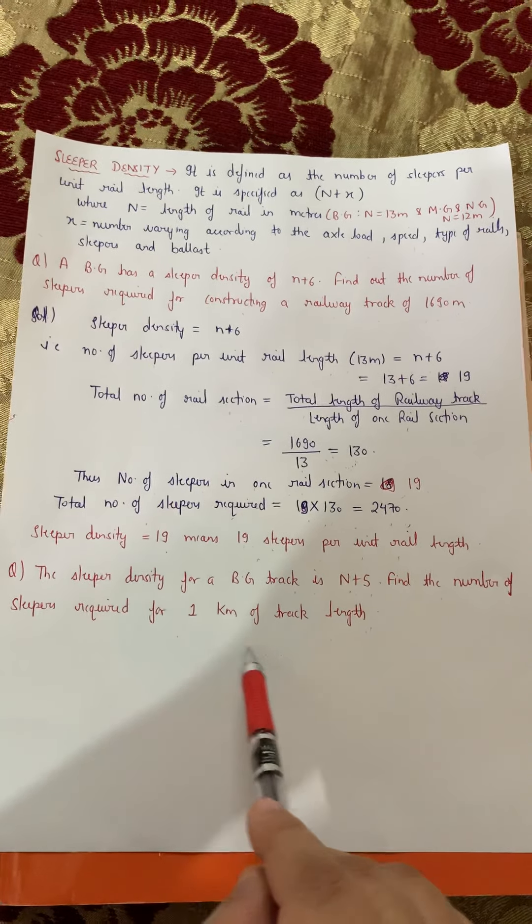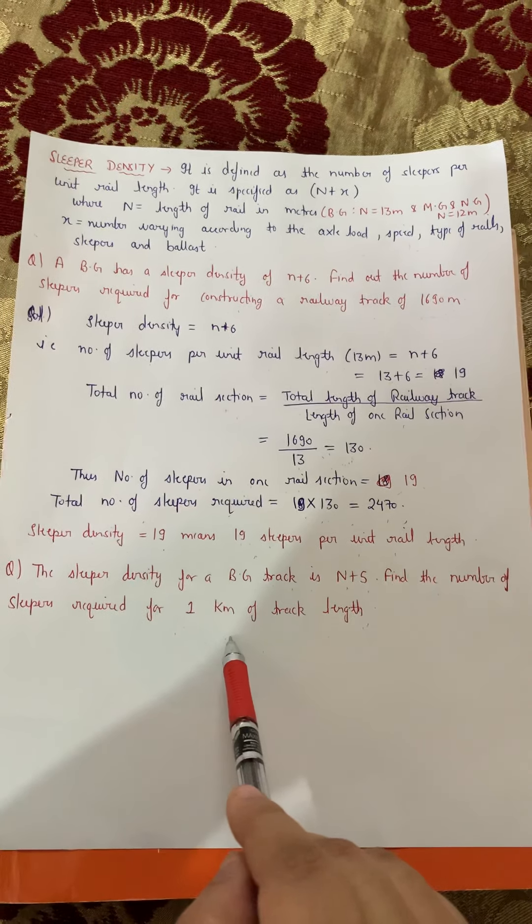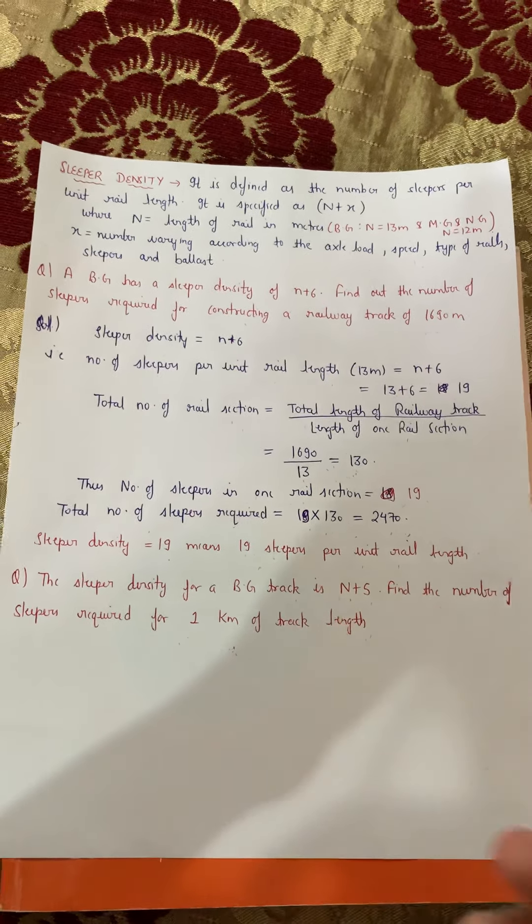Number of sleepers in one rail section aapke hain 19 — humne ise sleeper density se nikala. Total number of sleepers required kitnay honge: ek rail section mein 19, aur total rail sections 130. So 19 into 130 equals to 2470. Us pure railway track ko construct karne mein humare 2470 sleepers required hain.